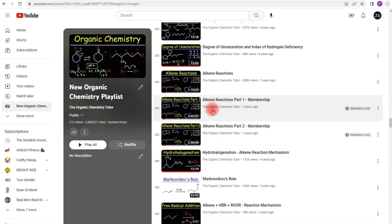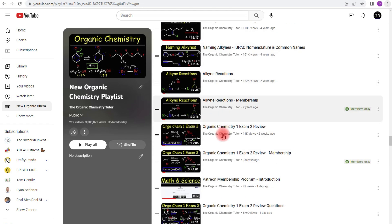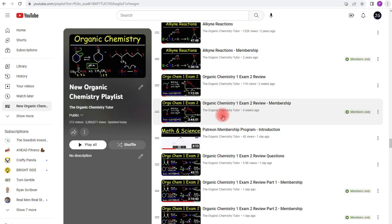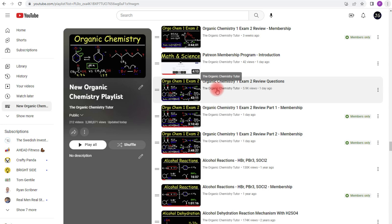I have videos on alkene reactions, alkyne reactions, and this is my organic chemistry one exam two review. Over here, this is the practice test with about 85 questions. As you can see, the full version is six hours long. The free version is about 43 minutes long.